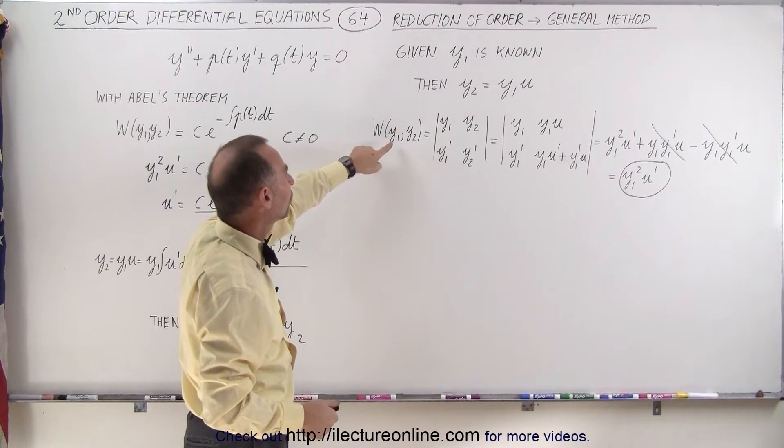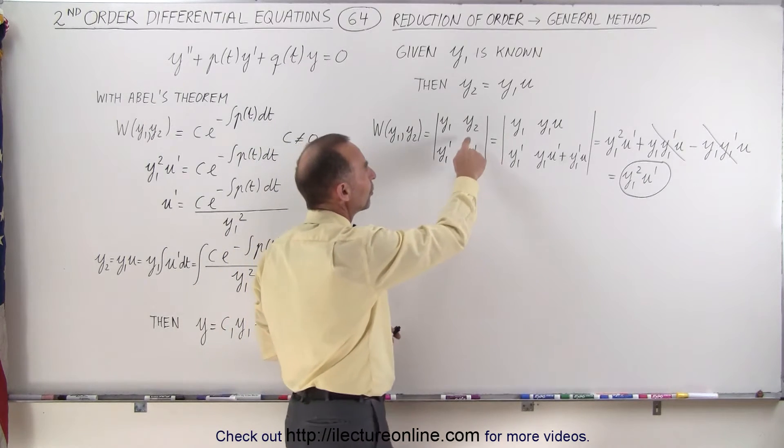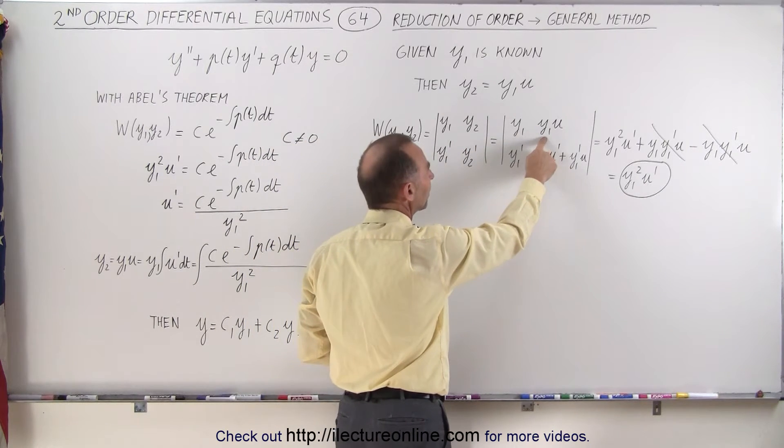We can take the Wronskian of the two solutions, y1 and y2. Since, of course, y2 is not known, we'll write it as y1 times u.